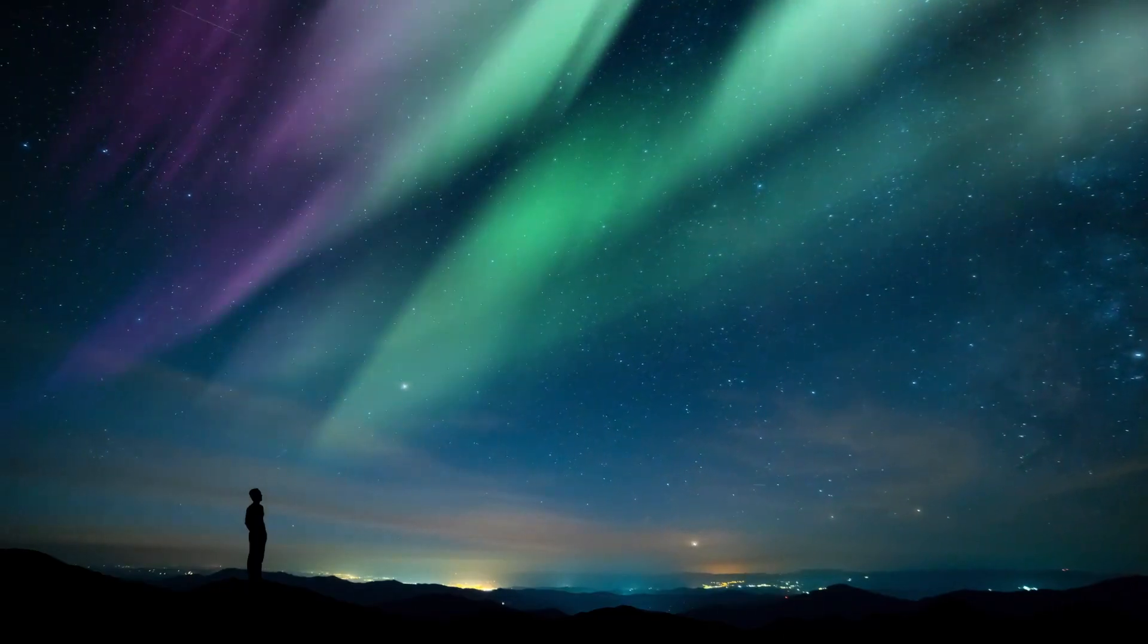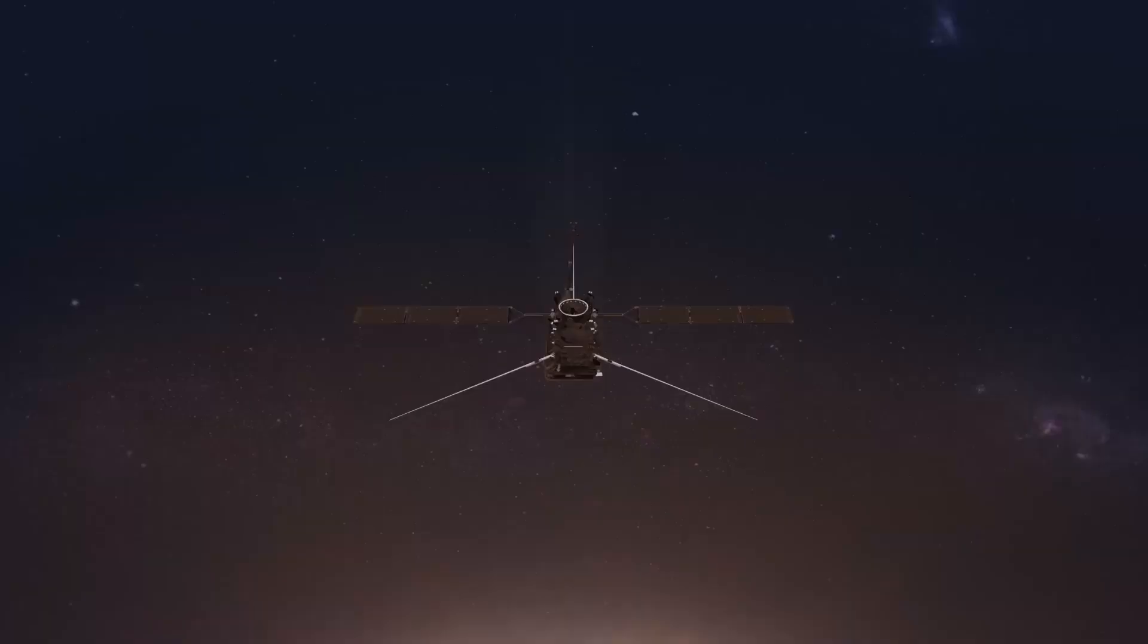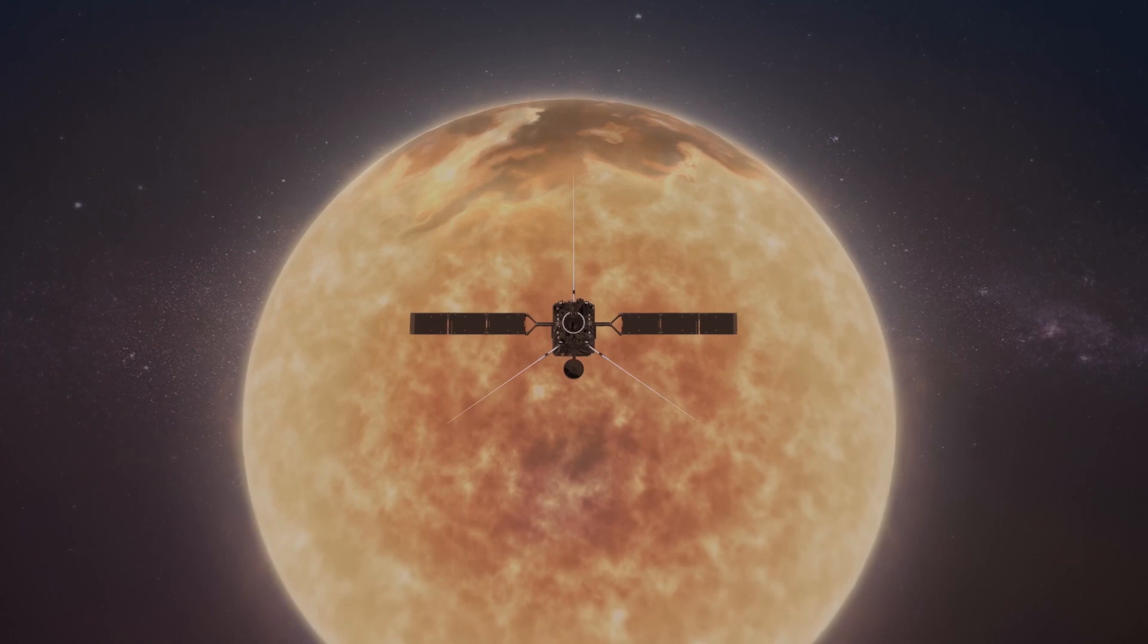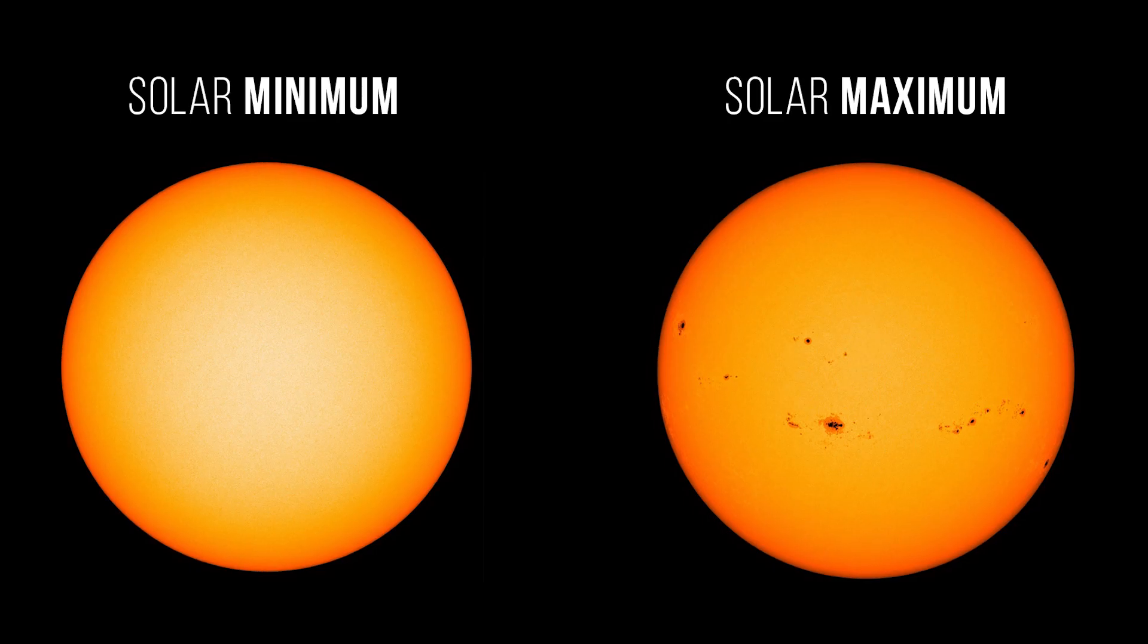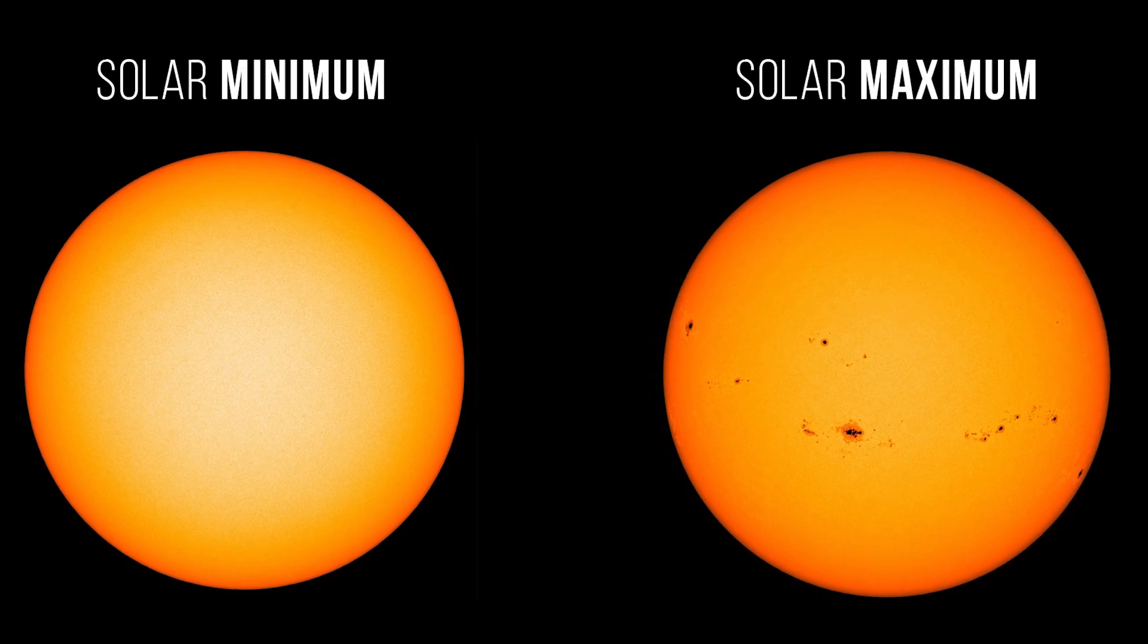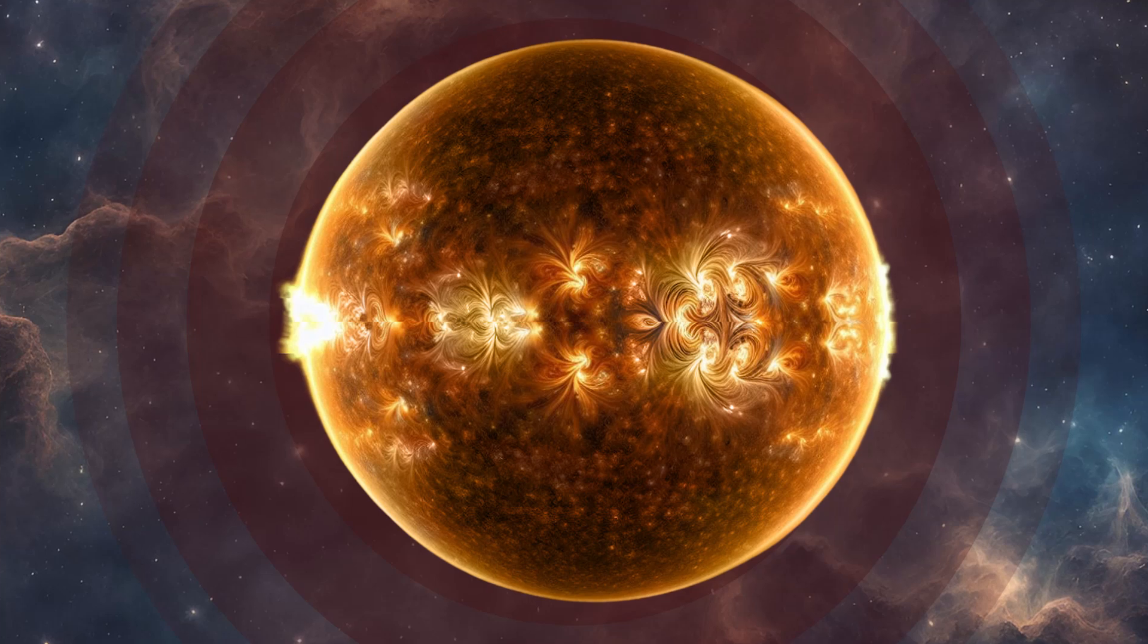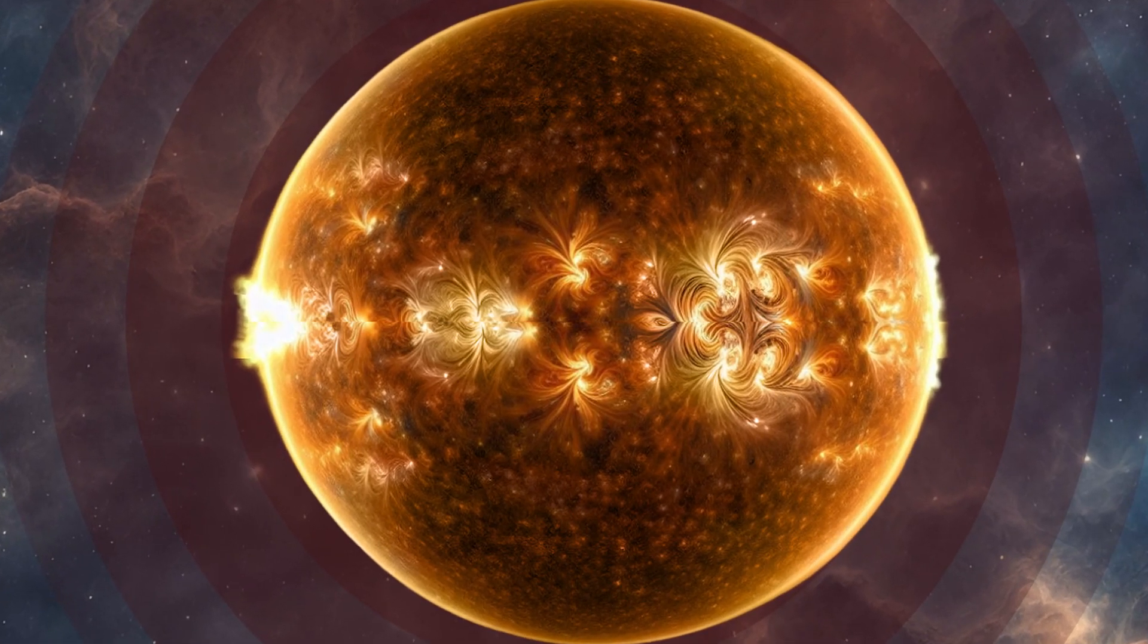The most powerful flare of the solar cycle so far was an X9.0 in October. X-Class denotes the most intense flares, while the number provides more information about its strength. NOAA anticipates additional solar and geomagnetic storms during the current solar maximum period, leading to opportunities to spot auroras over the next several months, as well as potential technology impacts.